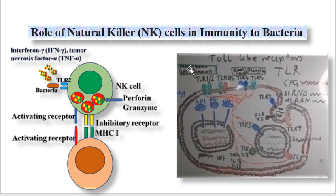Now I'm going to talk about the role of natural killer cells in immunity to bacteria. Natural killer cells primarily have antiviral activity, but in the case of bacterial infection, bacteria bind to natural killer cells through toll-like receptors. These toll-like receptors are known as pattern recognition receptors, and they recognize pathogen-associated molecular patterns on the surface of bacteria — for example, gram-positive bacteria express beta-glucan, and gram-negative bacteria express lipopolysaccharides.